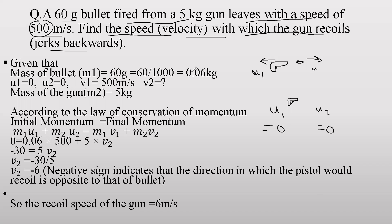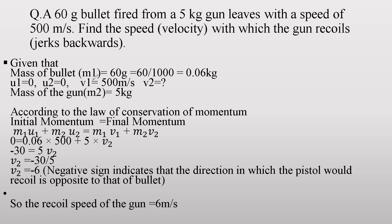We have a gun and a bullet. The mass of the bullet is 60 grams, which we convert to 0.06 kg. Before firing, both are at rest so velocities are zero. u1 is the initial velocity of the bullet and u2 is the initial velocity of the gun. After firing, v1 is the velocity of the bullet and v2 is the recoil velocity of the gun.